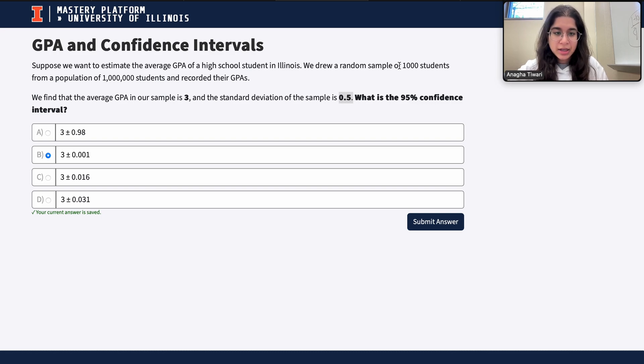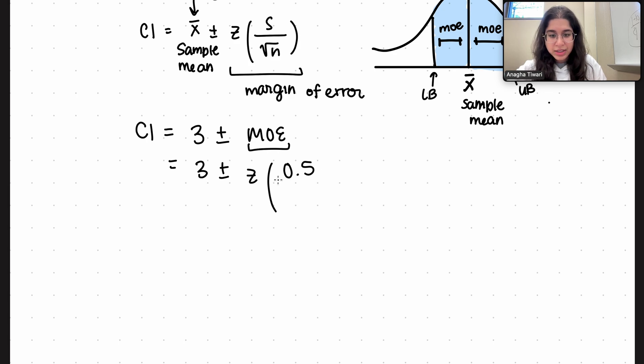Our n was a sample of 1,000 students. So this is going to be 0.5 divided by the square root of 1,000. We know that we now just need to solve for our z value, which we can find using the confidence level.